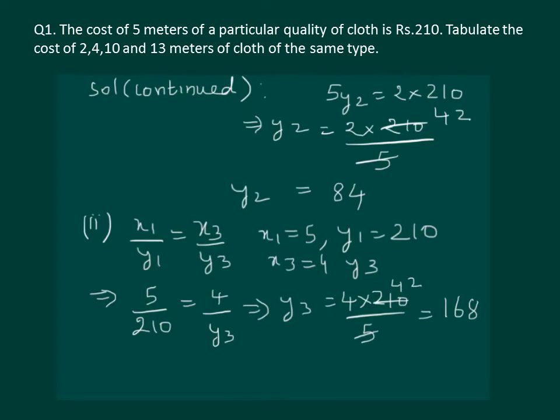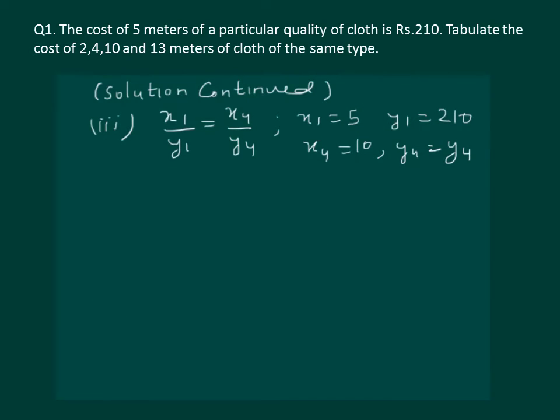Similarly we can find the values of y4 and y5 that are required to complete the table. Let us proceed to find the value of y4. We have x1 is equal to 5, y1 is equal to 210, x4 is equal to 10 and y4 will take as y4 only. On substitution and solving we will get y4 is equal to 10 into 210 whole divide by 5 and we will get the value to be 420. That means if we want to buy 10 meters of cloth we have to pay 420 rupees.